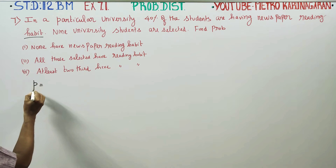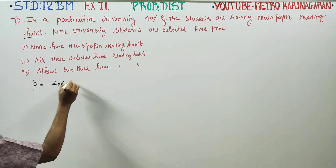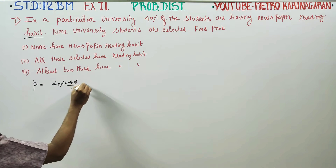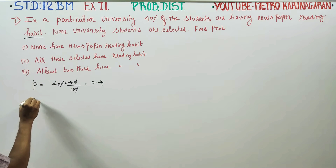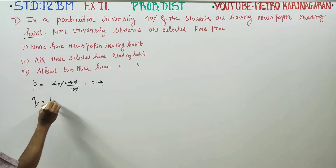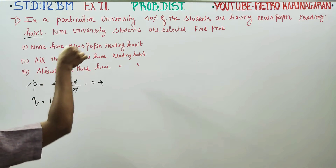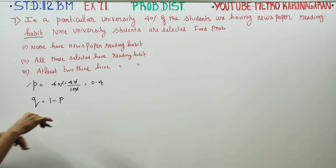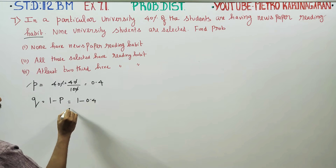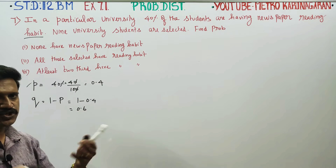The probability of students reading newspaper is 40%. 40% is 40 by 100, so P is equal to 0.4. Q is the opposite, using the formula 1 minus P. So Q equals 1 minus 0.4, which is equal to 0.6. This means 40% read the newspaper and 60% do not.